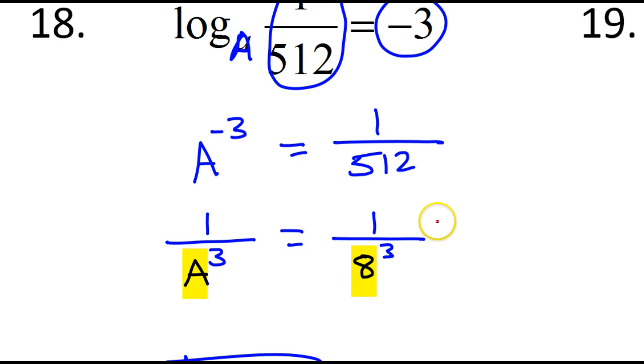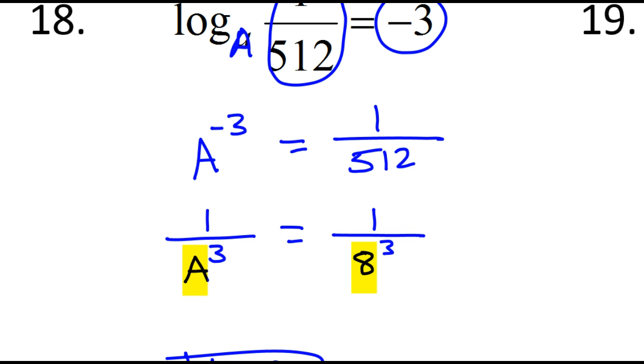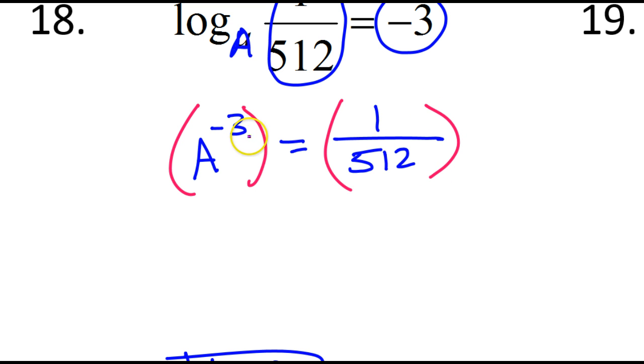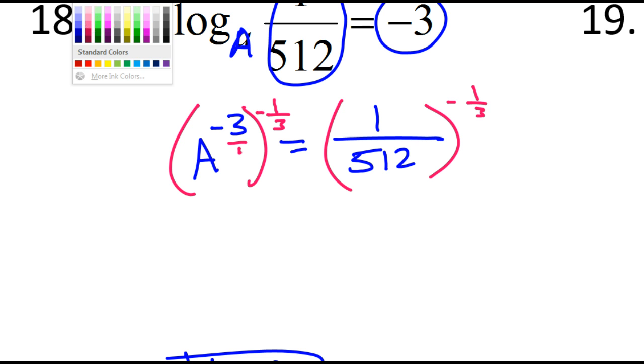You know, it occurs to me that there's another way that I could have solved this. My first step would still be the same, but let me go back and solve this another way. Another way I could solve this is if I want to get rid of this negative 3, I could do both sides of the equation to the negative 1 third power. That would cancel this out. A negative times a negative is a positive. And then the 1 third and 3 over 1, they cancel each other out. So, that would just give me A.